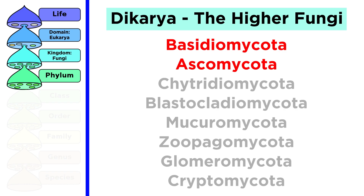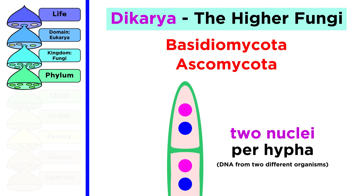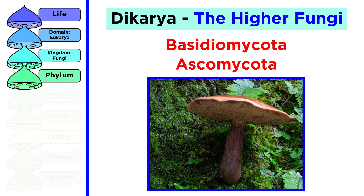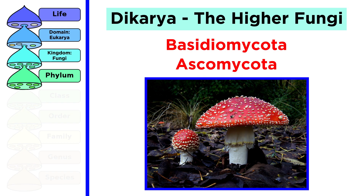Finally, and most notably, the two phyla basidiomycota and ascomycota are often grouped together as the subkingdom dikarya, also known as the higher fungi. This name refers to the pair of nuclei in the hyphae of a mycelium, which has DNA from two individual fungi. They are known as the higher fungi because these phyla produce the macroscopic mushrooms that you can see with the naked eye, so most of the well-known fungi fall into the dikarya subkingdom.